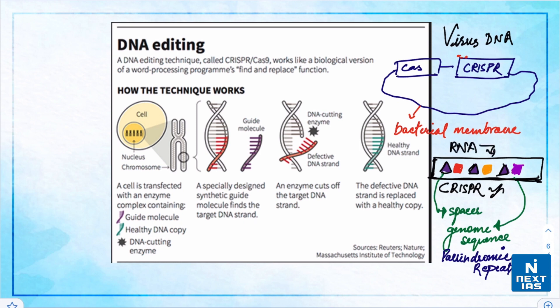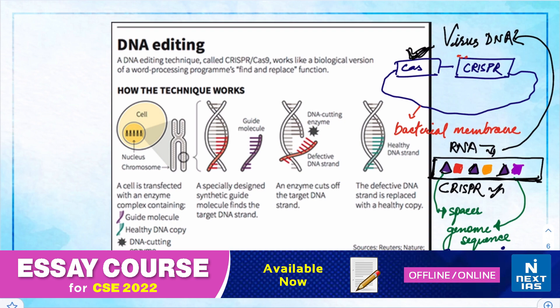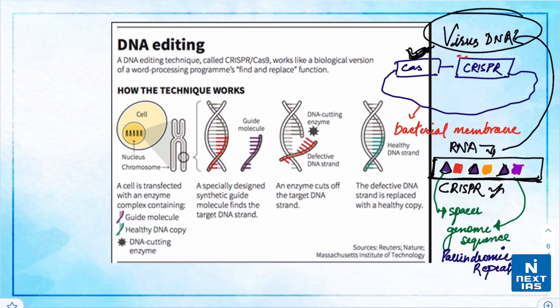If the virus attacks again, the bacteria produce RNA segments from the CRISPR array that recognize and attach to specific regions of the virus's DNA. The bacteria then use the Cas9 protein to cut the DNA apart, which disables the virus. This is how bacteria create immunity against viruses, and researchers have adapted this mechanism to edit the DNA of any organism — termed CRISPR Cas9.